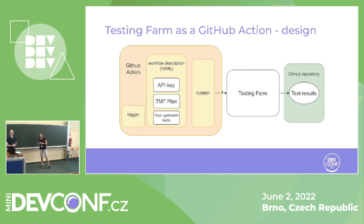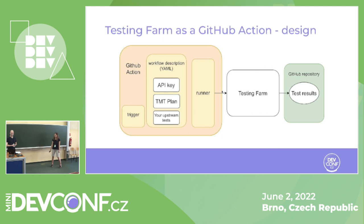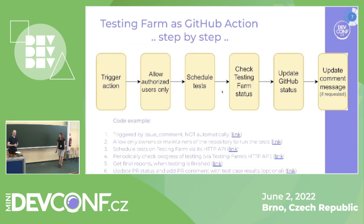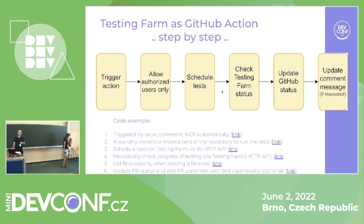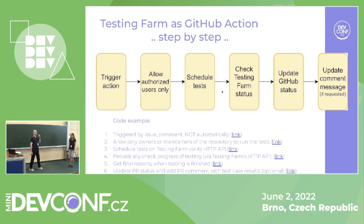Then we can use the Testing Farm for executing the tests, which provides the benefits of various distributions and various processor architectures. And then we can display the results of the tests and logs directly in the GitHub repository when the Testing Farm returns its outputs. This is the workflow designed by our CLR team, and it works not only for our project — it can be implemented in different projects.